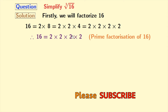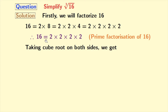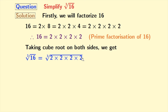Now we will take the cube root on both sides. Doing that, we get cube root of 16 is equal to cube root of 2 times 2 times 2 times 2. After grouping, we get cube root of (2 times 2 times 2) times cube root of 2.